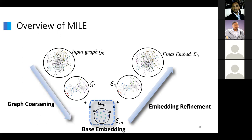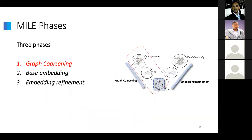Importantly, the only place where the user's methods are applied is on this coarsest level where the base embedding strategy is used. Everything else — the benefits of scaling — happen through the coarsening and refinement phase. So there are three phases: graph coarsening, embedding, and refinement.